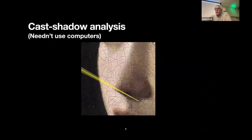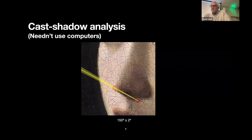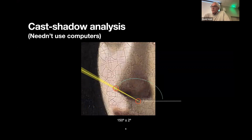The simplest method is cast shadow analysis. We take a point on the occluder, such as the tip of her nose, and its corresponding cast shadow point, draw a straight line between them, and that gives us the direction of illumination with error bars. We find the direction is 150 plus or minus two degrees, where throughout I'm measuring angles with respect to the horizontal.